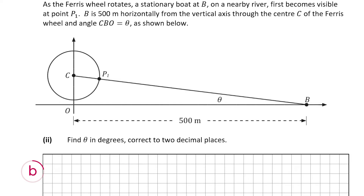B part 2 is worth 10 marks. As the Ferris wheel rotates, a stationary boat at B first becomes visible at point P1. B is 500 meters horizontally from the vertical axis through center C, and the angle CBO equals theta. We have right-angled triangle COB, with a right angle at O. OB = 500 meters and OC = 65 meters. We use trigonometric ratios to find theta.